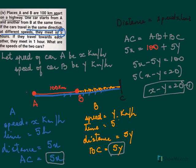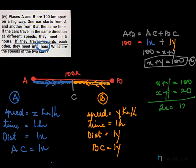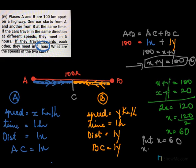Our first equation was X minus Y equals 20, and our second equation is X plus Y equals 100. Adding the two equations, the Y terms cancel, giving 2X equals 120, so X equals 60. To find Y, we substitute X equals 60 into X plus Y equals 100, giving 60 plus Y equals 100, so Y equals 40.